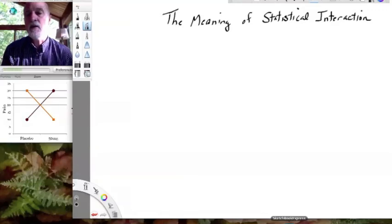So today's lesson is about a very important topic as we move beyond one-way designs and one-way analysis of variance, and that is the meaning of statistical interaction.